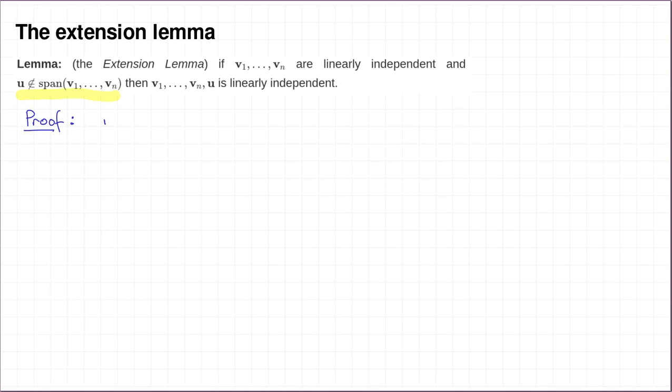So the contrapositive here is that if v1, v2, all the way up to vn and then u is linearly dependent, then u is in the span of v1 up to vn.